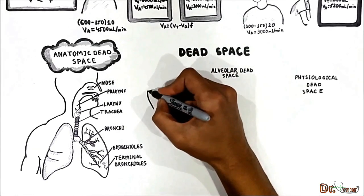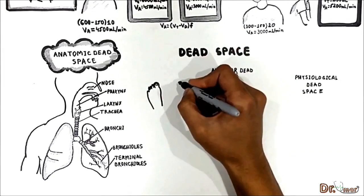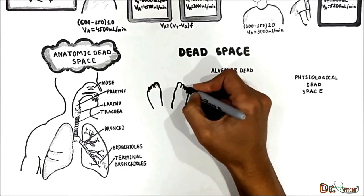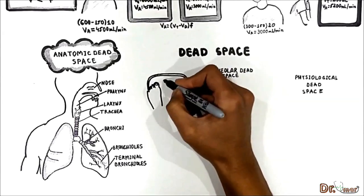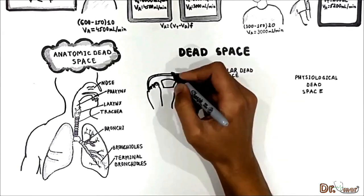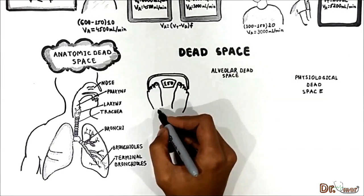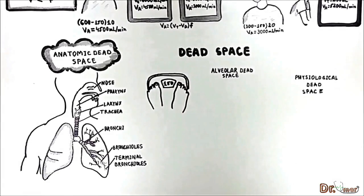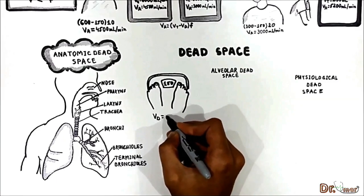The volume of the anatomic dead space in milliliters can be approximated by the person's weight in pounds. Thus, a 150-pound individual has a dead space of 150 milliliters.